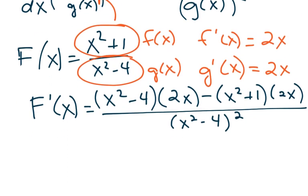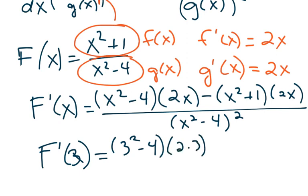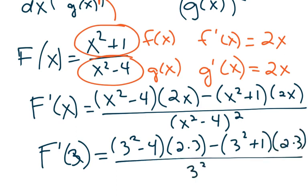So let me use a different color here. So if I put 3 in here, I have 3 squared minus 4, 2 times 3 minus 3 squared plus 1, 2 times 3, all over 3 squared minus 4 squared.